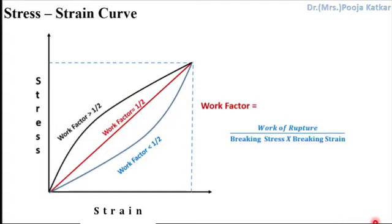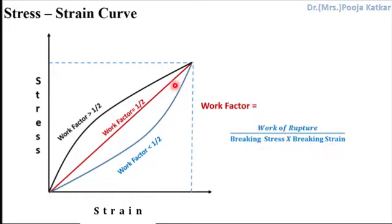Work factor is another way to express toughness. For materials that obey Hooke's law from start to breaking point, the work factor is half — because work factor is the ratio of work of rupture to the product of breaking stress and breaking strain, which equals 0.5. Materials whose curve is concave towards the strain axis are considered tougher and show a work factor greater than half. Materials with a curve concave towards the stress axis show a work factor less than half and are considered less tough.